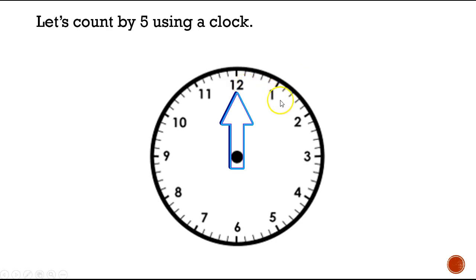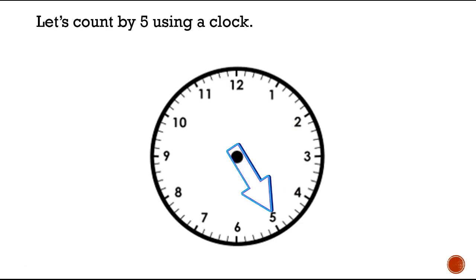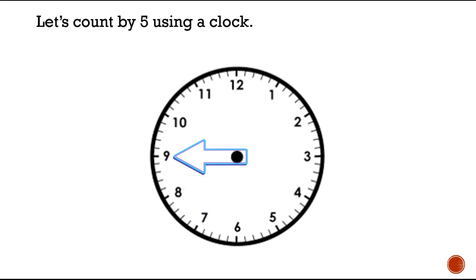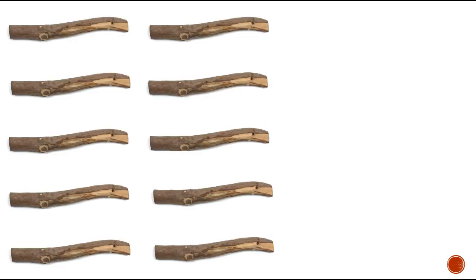We're not counting 1, 2, 3, 4, 5 — we're counting by fives for each rotation. Let's see how many minutes are in one hour by counting by fives: 5, 10, 15, 20, 25, 30, 35, 40, 45, 50, 55, 60. So there are 60 minutes in one hour. Good job counting by fives!